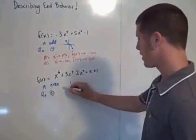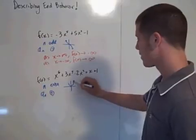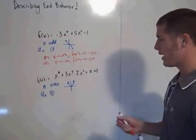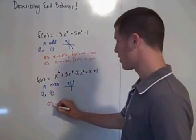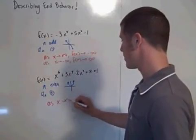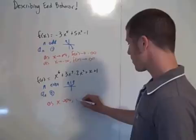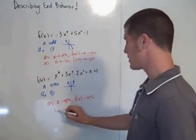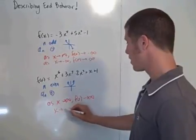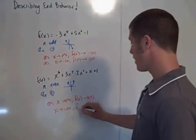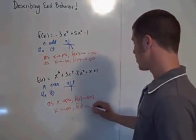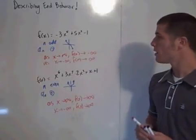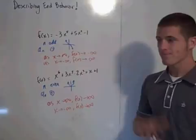So the graph looks something like this. The end behavior: as x approaches infinity, f of x approaches infinity, and as x approaches negative infinity, f of x approaches infinity. So just commit those four options to your memory.